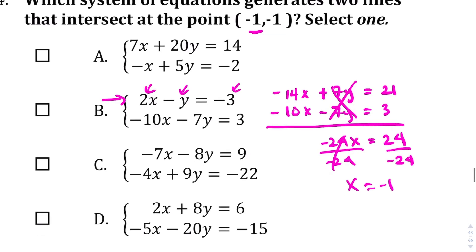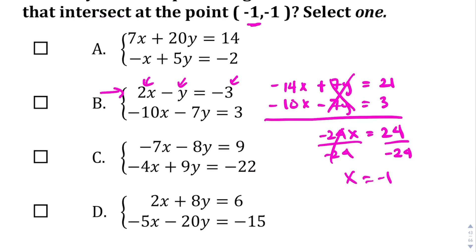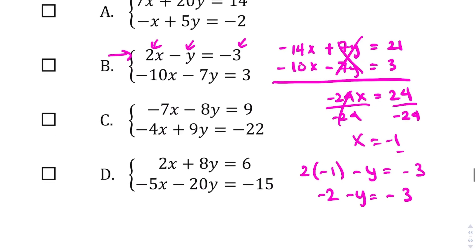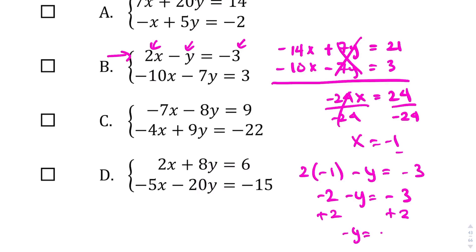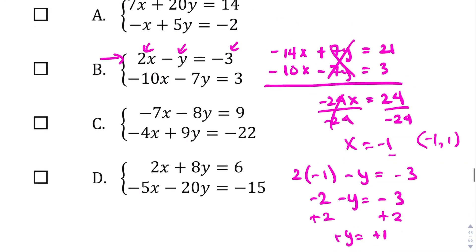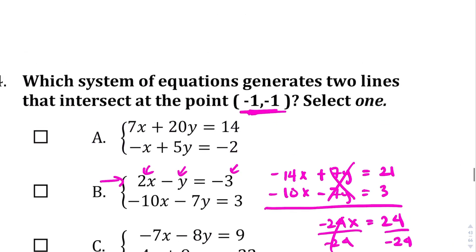So let's keep going and solve for y. I'm going to plug negative 1 in for the x. So 2 times negative 1 minus y equals negative 3. 2 times negative 1 is negative 2, minus y equals negative 3. I'm going to add 2 to both sides: negative y equals negative 1. Switch the signs, so y equals 1. So our answer in this case is going to be negative 1 comma 1, which is not what we're looking for. We want negative 1 comma negative 1. Yeah, so it's not what we're looking for. Not B.